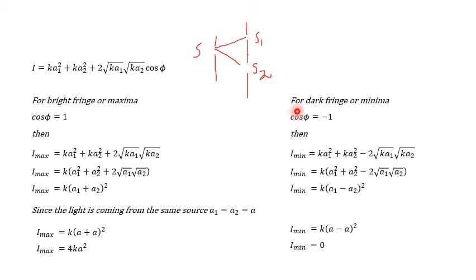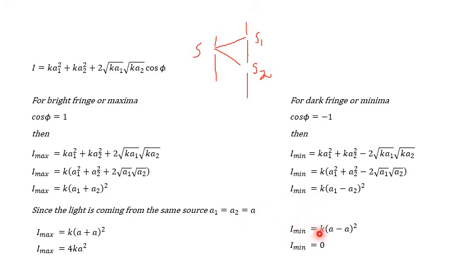Similarly, we can find the intensity for the dark fringe or minima. In the case of minima, the cos φ term is −1. So I_min equals K·A1² + K·A2² − 2√(K·A1)·√(K·A2). Taking K common: K(A1² + A2² − 2√A1·√A2), which we can write as K(A1 − A2)². Since the light is from the same source, A1 equals A2 equals A, so I_min equals K(A − A)² equals 0.